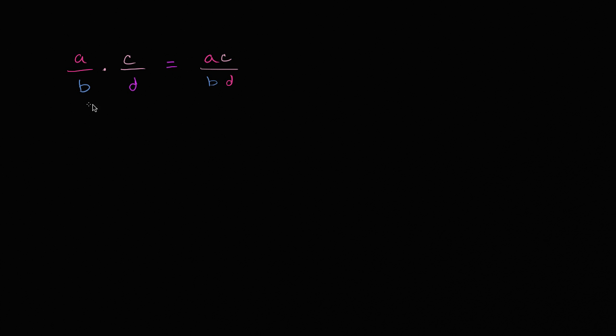Instead of multiplying, what would have happened if we were dividing? So if we had a over b, a over b divided by c over d. What would this be? And once again, encourage you to pause the video and figure it out on your own.